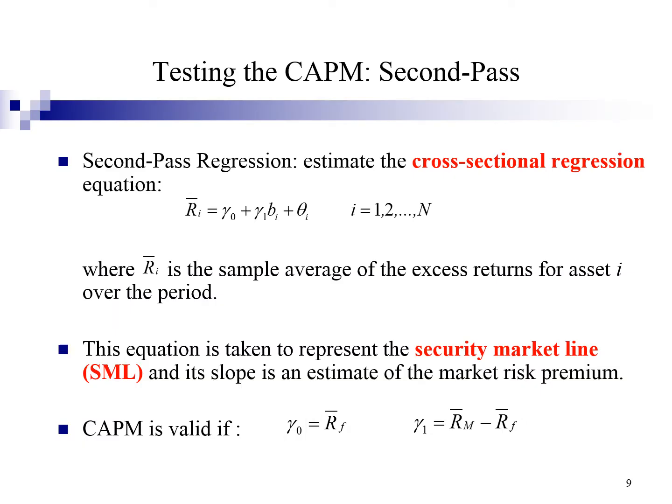The next step is to perform a second-pass regression, which is a cross-sectional test. We use the equation: bar R_i equals gamma 0 plus gamma 1 times beta_i plus theta_i, where i refers to each stock. Bar R is the mean excess return of a security, gamma 0 is the intercept term, gamma 1 is the risk premium, beta is the estimated beta from time series analysis, and theta refers to the disturbance terms. This equation represents the security market line, and its slope is an estimate of the market risk premium. CAPM is valid if gamma 0 equals the average risk-free rate and gamma 1 equals average market return minus average risk-free rate.